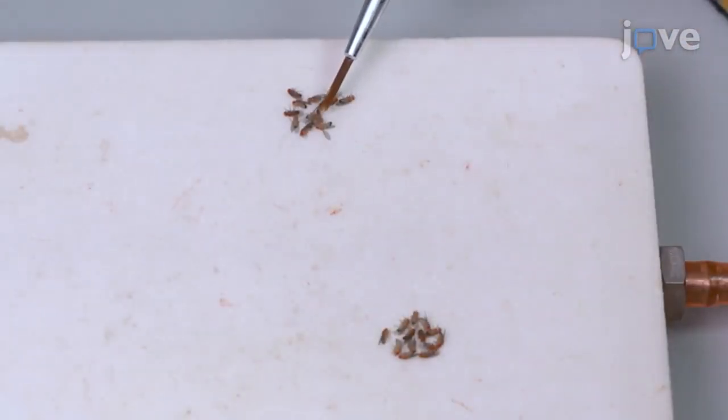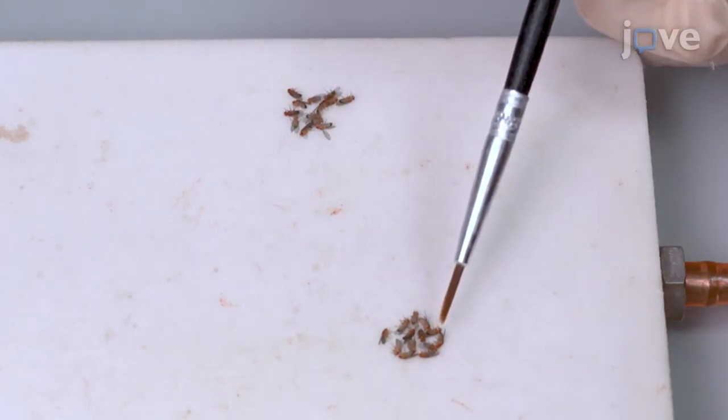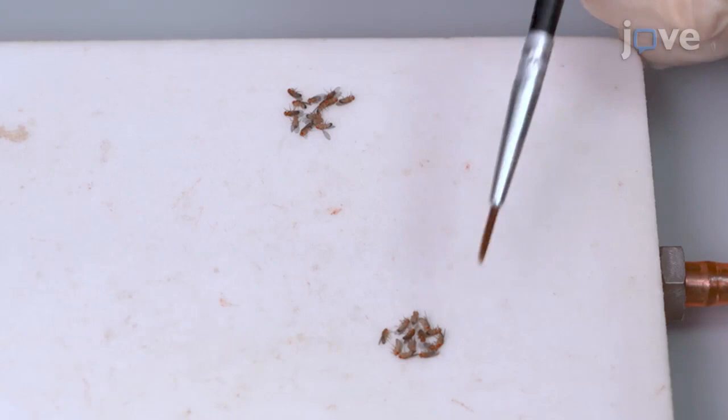One group will serve as the control uninjured flies, and the second experimental group will be subjected to penetrating traumatic brain injury.